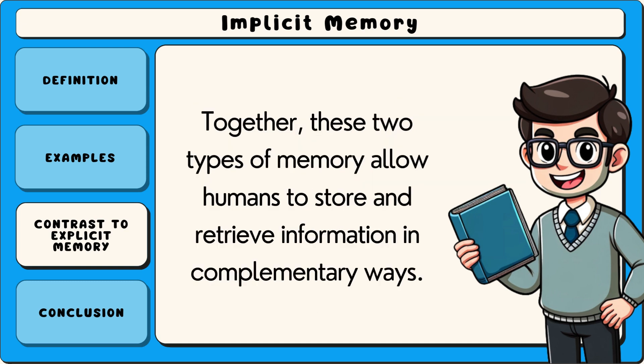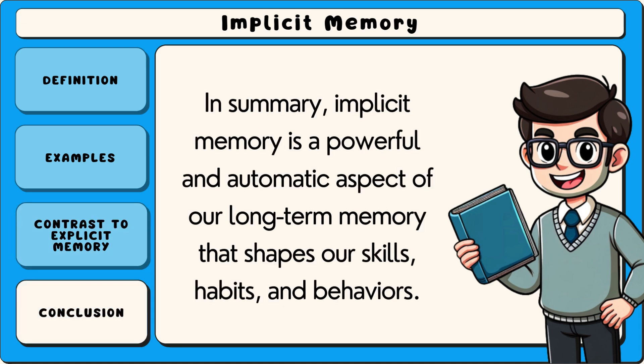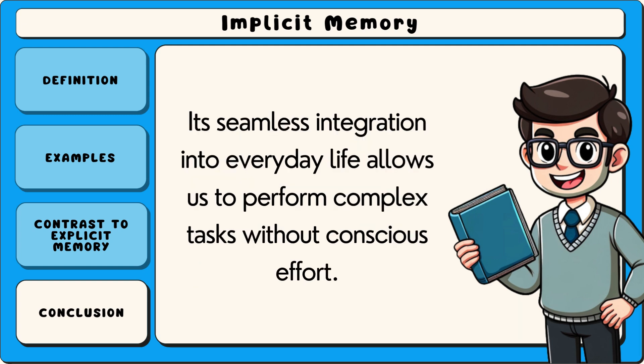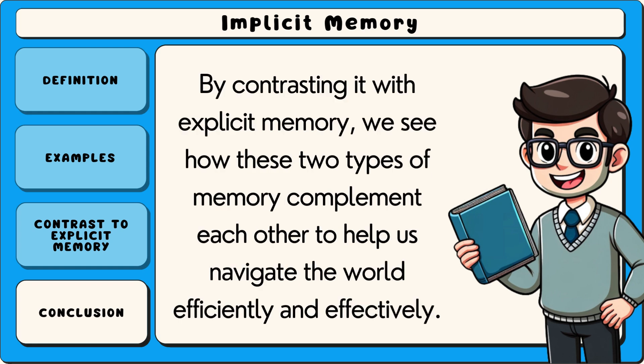Together, these two types of memory allow humans to store and retrieve information in complementary ways. In summary, implicit memory is a powerful and automatic aspect of our long-term memory that shapes our skills, habits, and behaviors. Its seamless integration into everyday life allows us to perform complex tasks without conscious effort. By contrasting it with explicit memory, we see how these two types of memory complement each other to help us navigate the world efficiently and effectively.